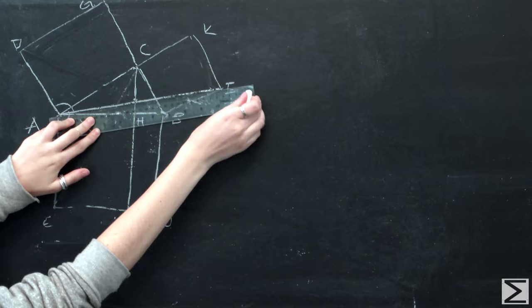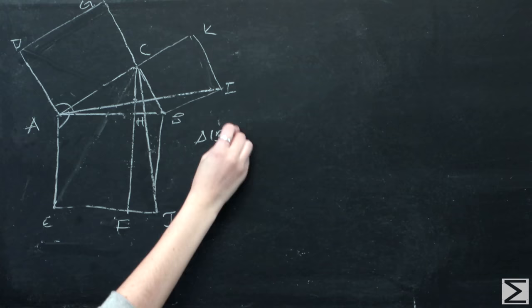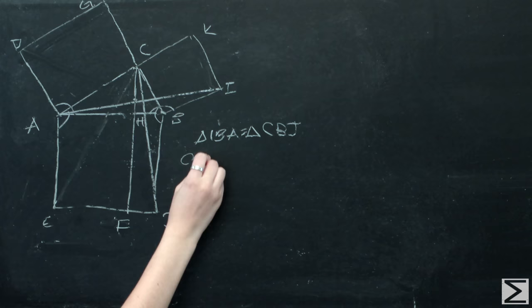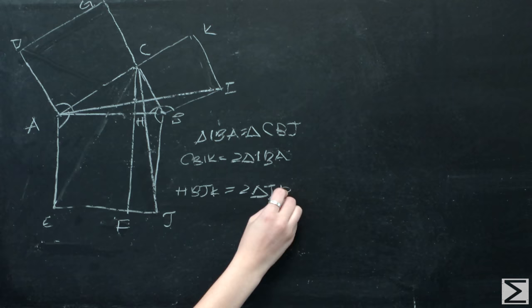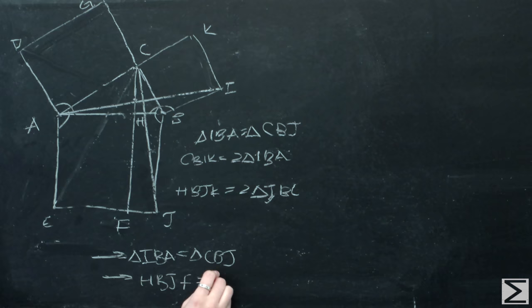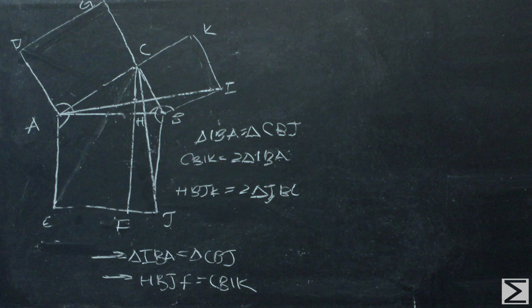If we draw the lines CJ and IA, we can see that triangle IBA is equal to triangle CBJ. The square CBIK is twice that of triangle IBA because they have the same base BI and have the same height as they are between two parallel lines IB and AK. The rectangle HBJF is twice the triangle GBC because they have the same base BJ and have the same height as they are between two parallel lines. Since triangle IBA is equal to triangle CBJ, then HBJF is equal to CBIK.